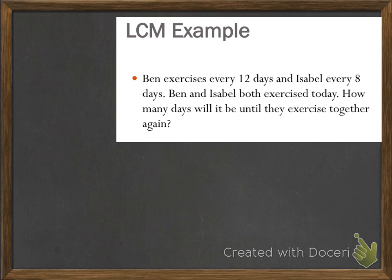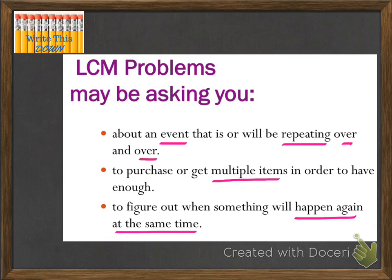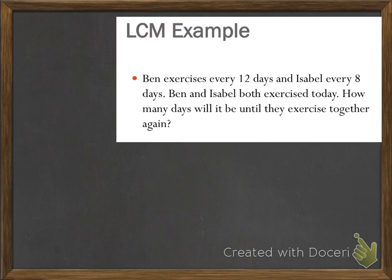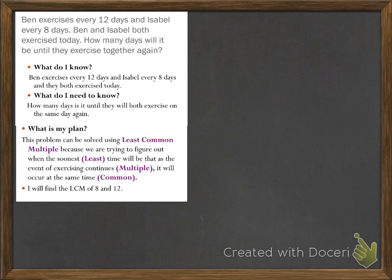The question asks when will they exercise again. Which bullet does that fall under — the first, second, or third? If you answered the third — to figure out when something will happen again at the same time — that's correct. So let's answer our three questions. What do I know? Ben exercises every 12 days and Isabel every 8 days.